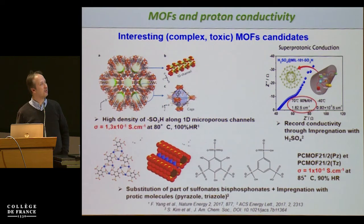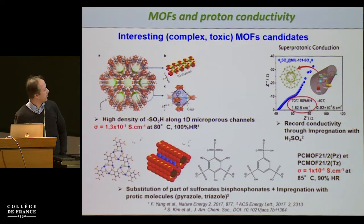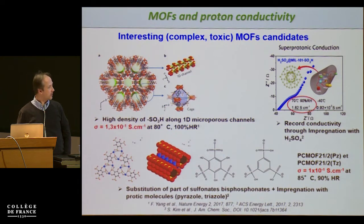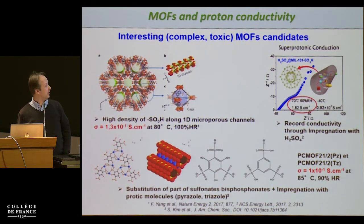An alternative approach uses more environmentally friendly metals but non-commercially available ligands — for example, sulfonic zirconium or zinc-based materials with sulfonic groups on the linker. The conductivity is also quite good in this case, but we still face the problem of expensive linkers and complex synthesis conditions. No solution to date was fully satisfying.